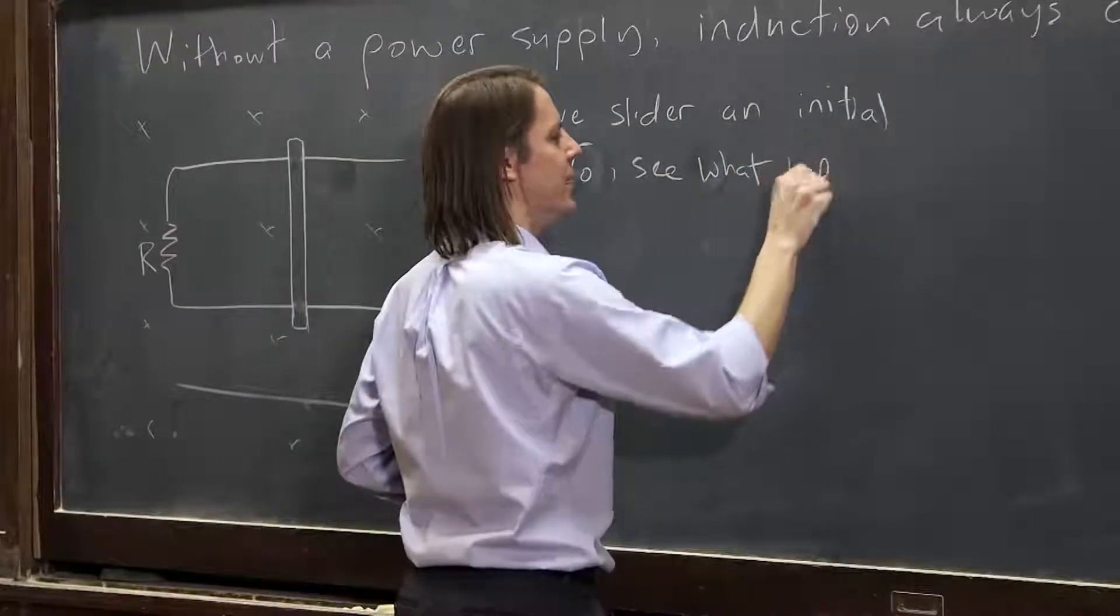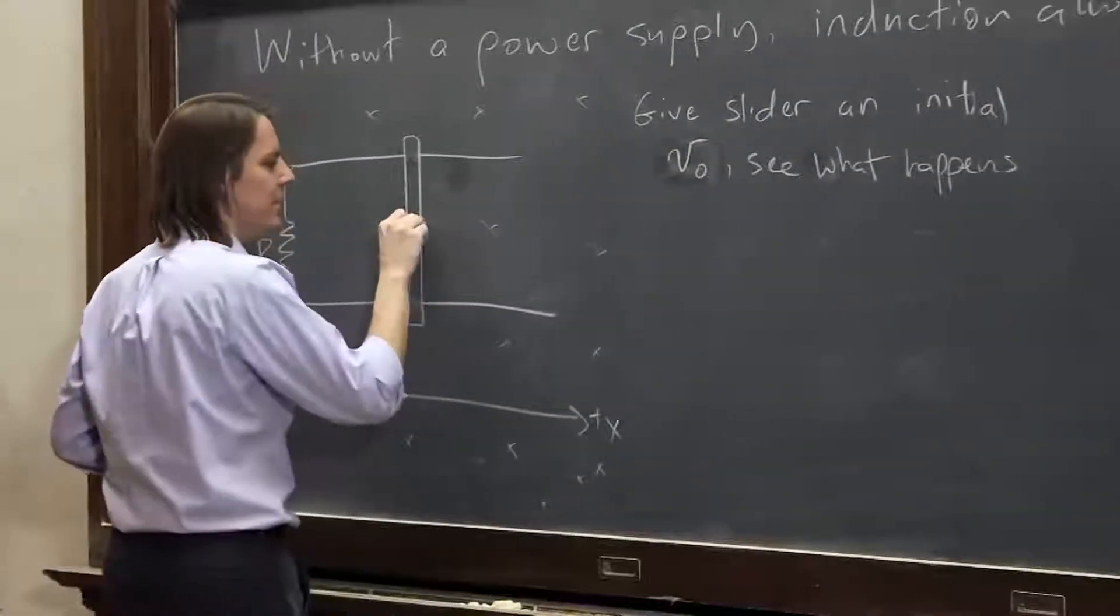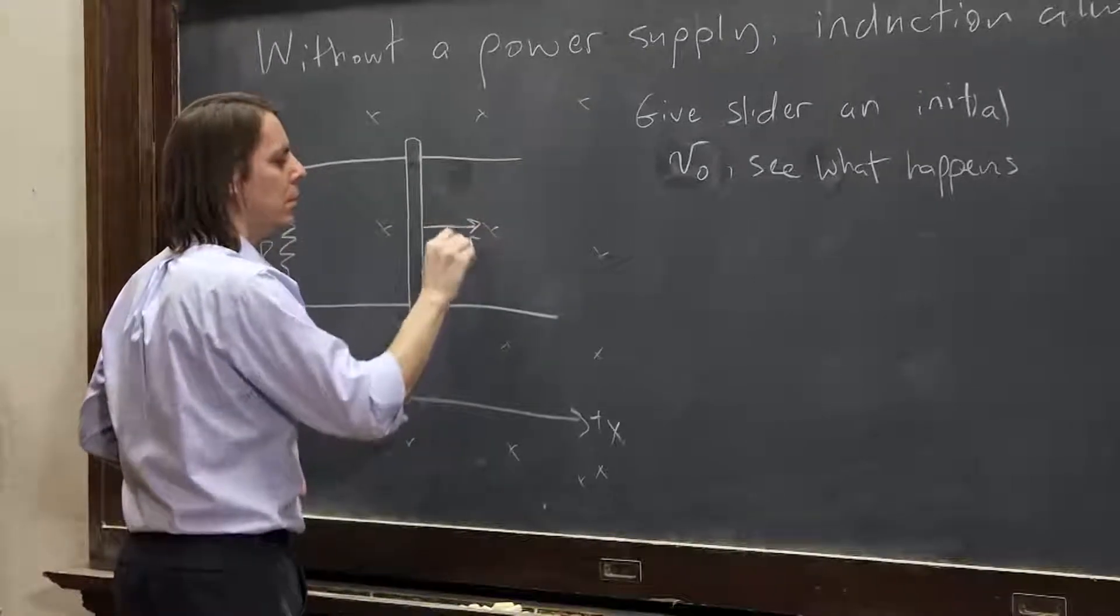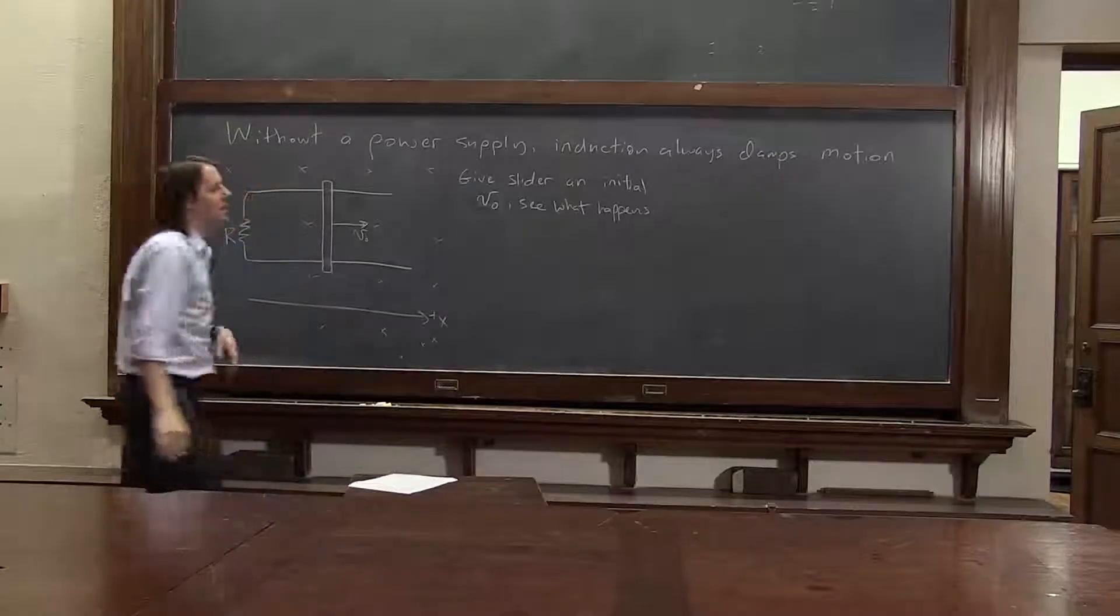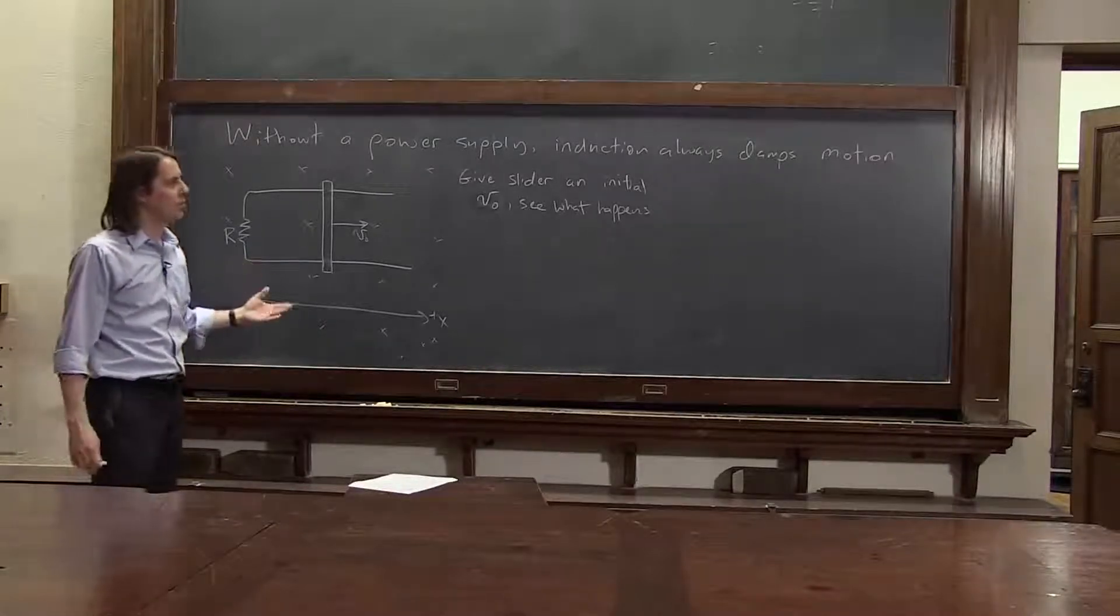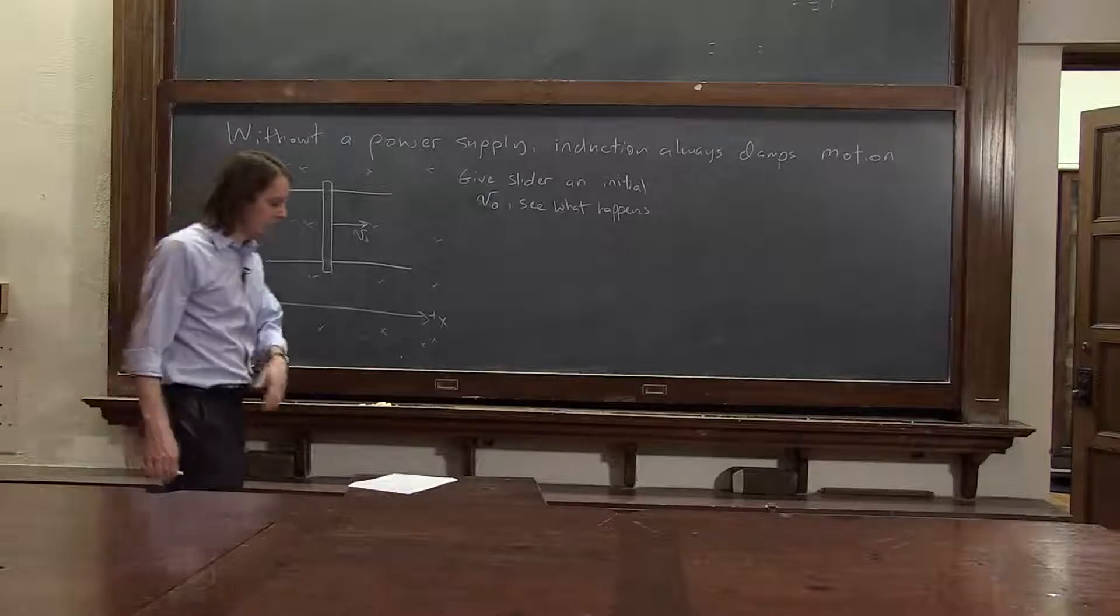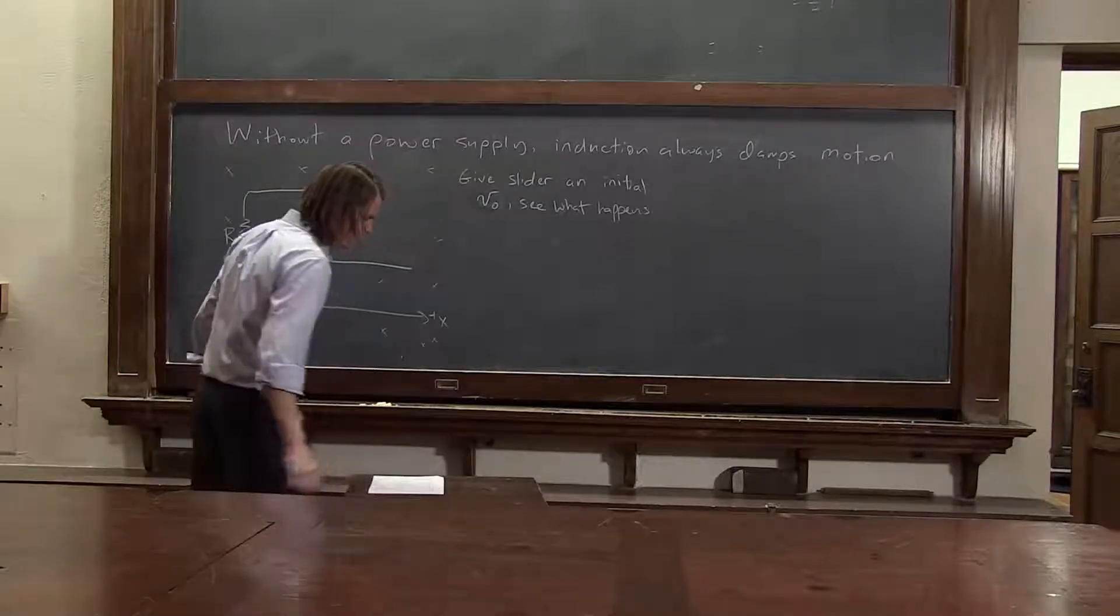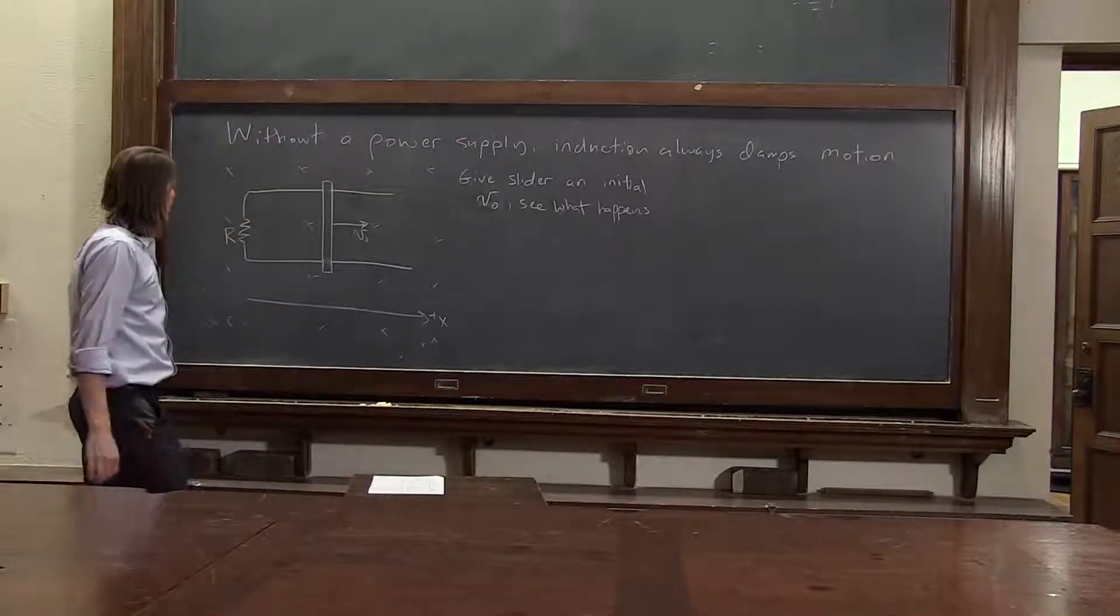So the slider is given V0 that way, and by see what happens means let's solve for the velocity as a function of time. Will it slow down? Will it speed up? Will it stay constant? Will it explode? Who knows what it will do?